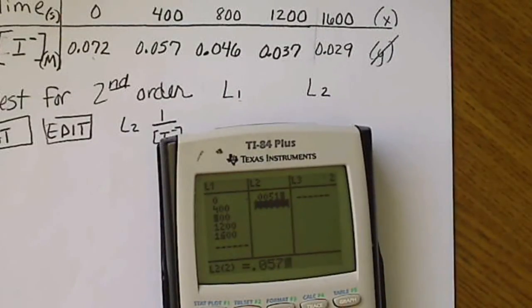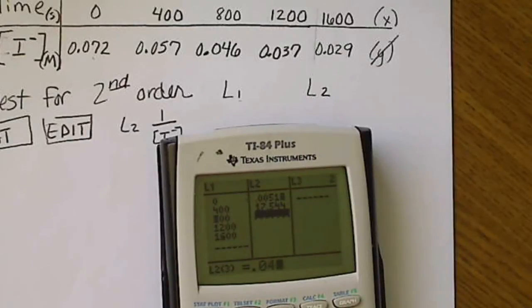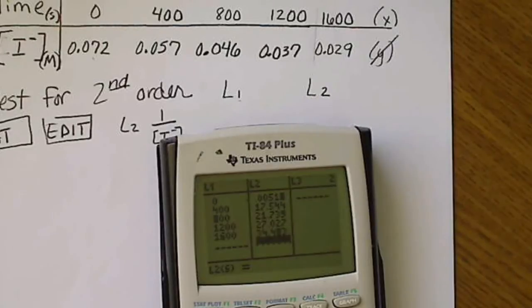And then I do the same for the other data points: 0.057, take the reciprocal; 0.046, take the reciprocal; 0.037, reciprocal of that; and 0.029, and take the reciprocal of that.